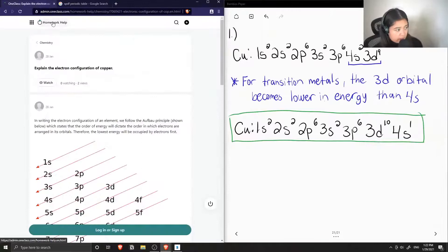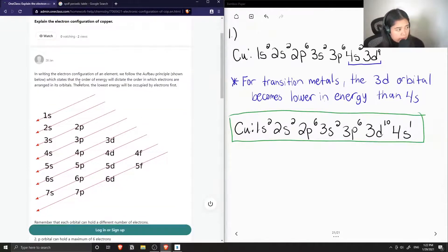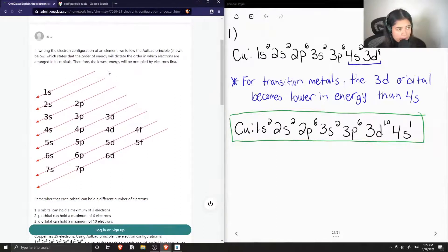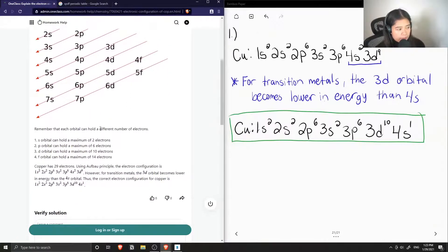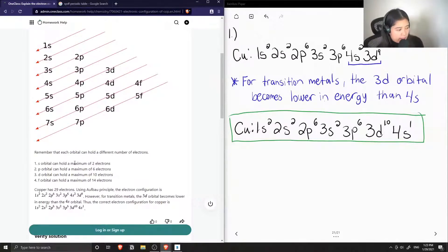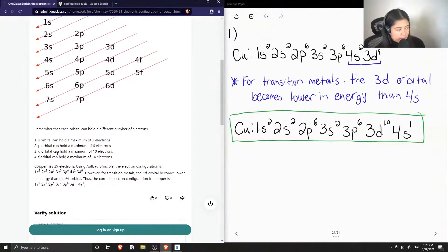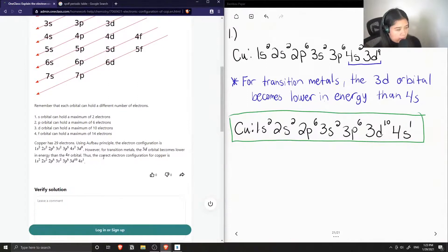So now let's see what the tutor said. In writing the electron configuration of an element, we follow the Aufbau principle, shown below, which states that the order of energy will dictate the order in which electrons are arranged in its orbitals. Therefore, the lowest energy will be occupied by electrons first. Remember that each orbital can hold a different number of electrons. The S orbital can hold 2, the P orbital can hold 6, the D orbital can hold 10, and the F orbital can hold up to 14. So copper has 29 electrons, and using the Aufbau principle, the electron configuration is the following. So this is what we had initially as well.